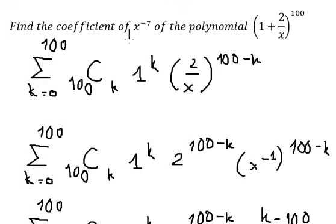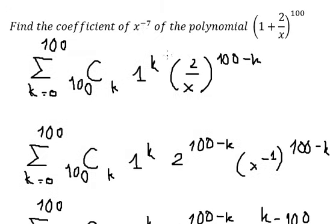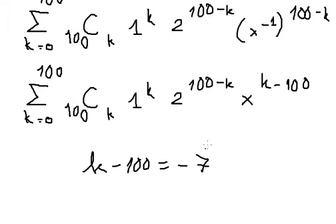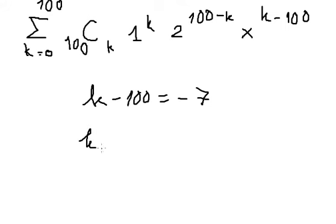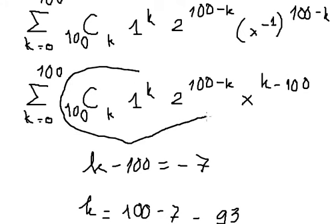They want to find the coefficient of s to the power of negative seven, so we set k minus 100 equal to negative seven. Moving negative 100 to the right side gives us k equals 100 minus seven, which is k equals 93.